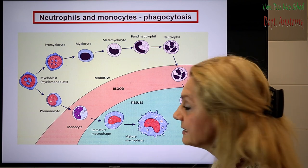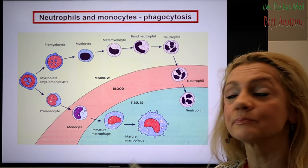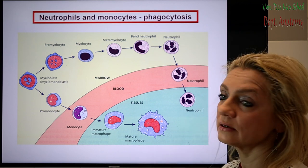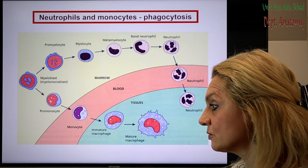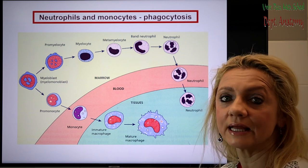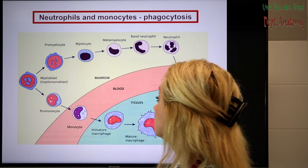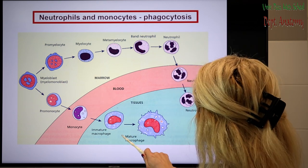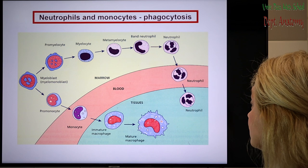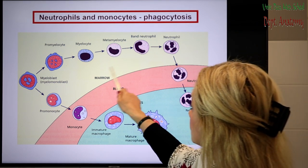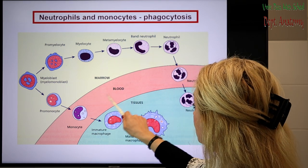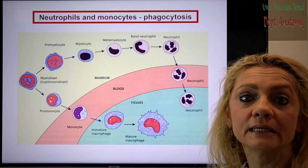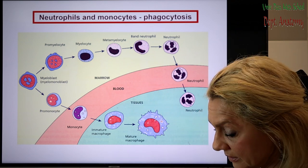An interesting thing that can explain why neutrophils and monocytes are able to phagocytose is that they develop from a common ancestor — one common blast cell. Neutrophils and mature macrophages are both able to phagocytose. From the bone marrow they enter the blood, and from the blood, white blood cells typically leave the circulation and enter tissues.